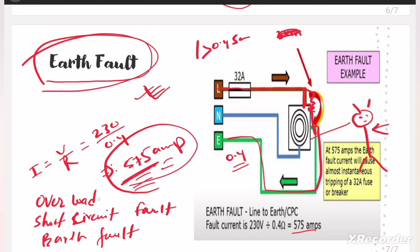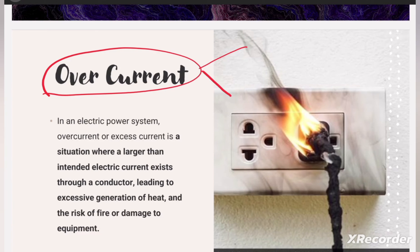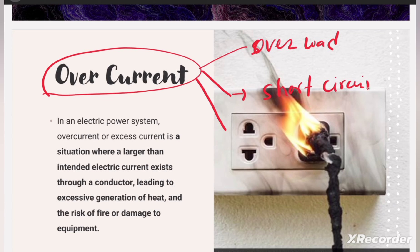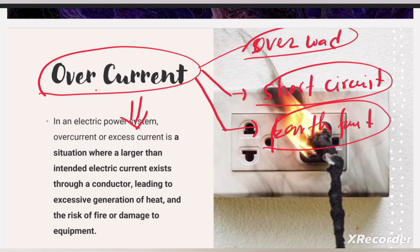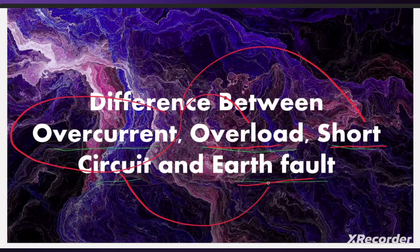What we understand so far: overload, short circuit fault, and earth fault — in all three conditions there is excessive current in the circuit. This excessive current is called overcurrent. Overcurrent has three sections: one is overload, second is short circuit, and third is earth fault. So we can conclude that overcurrent can be due to overload, due to short circuit, or due to earth fault condition.